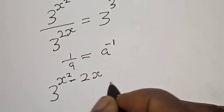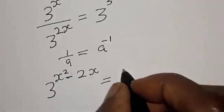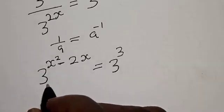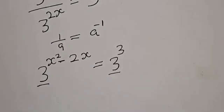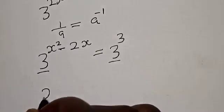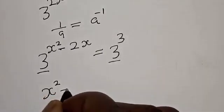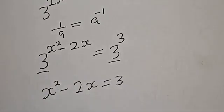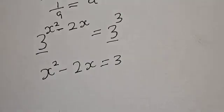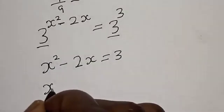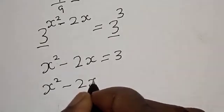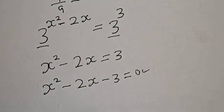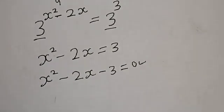Since they have the same base, we are left with s squared minus 2s equal to 3. This gives us s squared minus 2s minus 3 equals 0. This is a quadratic equation; let's solve it using the factorization method.